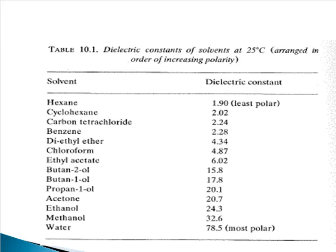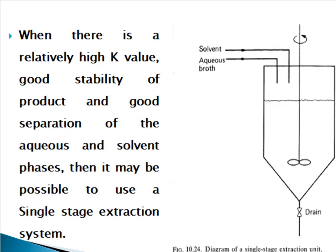This table shows the dielectric constants of solvents at 25 degrees centigrade. According to this table, hexane has the lowest dielectric constant and is therefore the least polar solvent, while water has a higher dielectric constant of 78.5 and is therefore the most polar solvent.